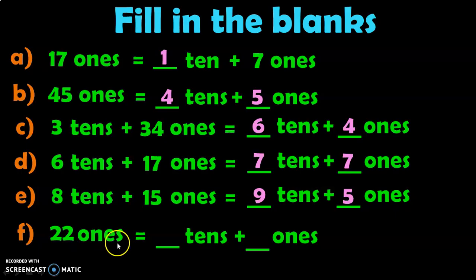One last example: 22 Ones can be written as 2 Tens plus 2 Ones.